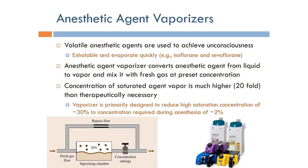The part responsible for adding the anesthetic agent is the vaporizers. Volatile anesthetic agents are used to achieve unconsciousness. We use inhalation anesthetics — agents that are exhalable and evaporate quickly, such as isoflurane. The anesthetic agent vaporizers convert the anesthetic agent from liquid to vapor and mix it with the fresh gas at preset concentrations.